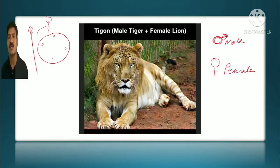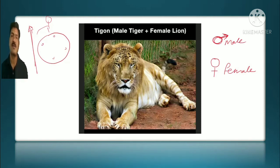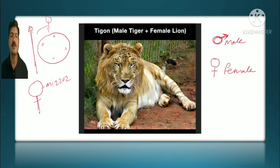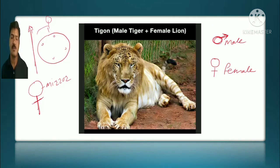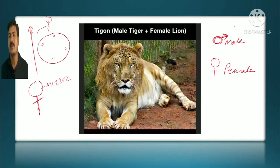The female symbol comes from Queen Elizabeth's era — females used to carry a mirror with a handle for makeup. That mirror with its handle became the female sign. So the male symbol represents shield and spear, and the female symbol represents a mirror.